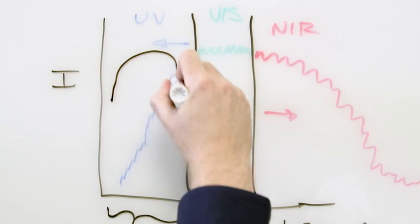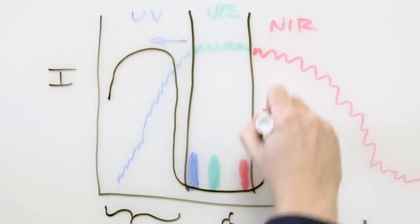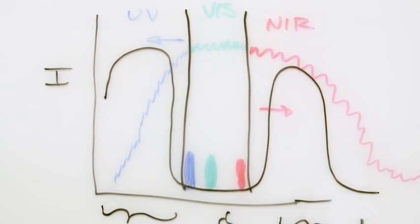So the light we can't see with our eyes, like ultraviolet and infrared, has to do the work.